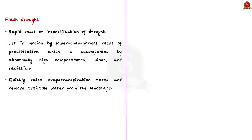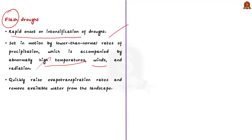In this news article, the author concentrates on flash droughts. As the name suggests, flash drought occurs in a flash — it is simply the rapid onset or intensification of drought. Unlike slow-evolving drought caused by a decline in precipitation, flash drought is set in motion by lower than normal rates of precipitation accompanied by abnormally high temperatures, winds, and radiation. Together, these changes in weather can rapidly alter the local climate, quickly raising evapotranspiration and removing available water from the landscape.